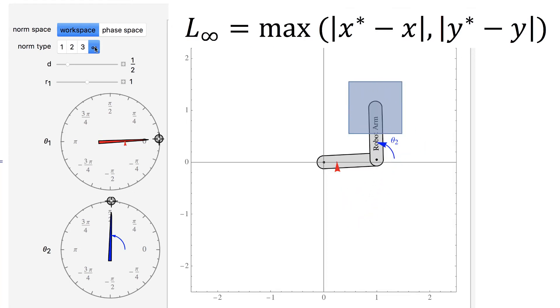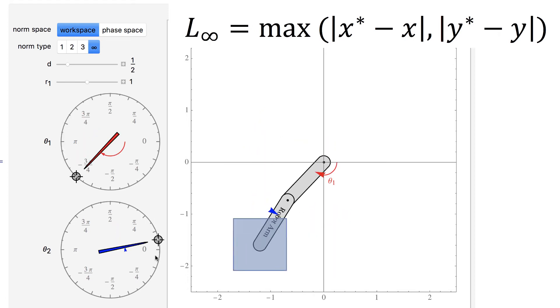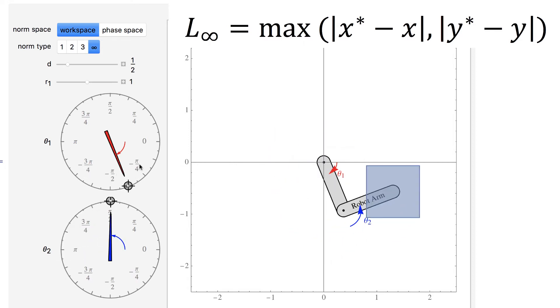The infinity-norm is the limit of raising the distance in x and y to n, and then taking the nth root of the sum. This limit is just the maximum distance in either x or y, so it always looks like a square.